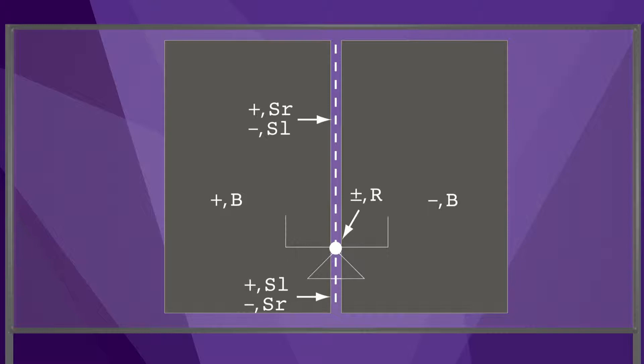Putting everything together, we get this picture of the twists that are feasible when there is a single contact. Feasible rotation centers to the left of the contact normal have a plus label and cause breaking contact. Feasible rotation centers to the right of the contact normal have a minus label and cause breaking contact. Rotation centers at the contact location cause rolling. Finally, rotation centers along the contact normal line but not at the contact cause sliding. Positive rotation centers above the contact and negative rotation centers below the contact cause right sliding, and negative rotation centers above the contact and positive rotation centers below the contact cause left sliding.